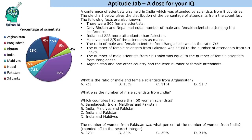Welcome to Aptitude Jab. This is a set based on a pie chart. A conference of scientists was held in India, attended by scientists from eight countries. The pie chart gives the distribution of percentage attendance from these countries: Afghanistan, Bangladesh, Bhutan, India, Maldives, Nepal, Pakistan, and Sri Lanka.